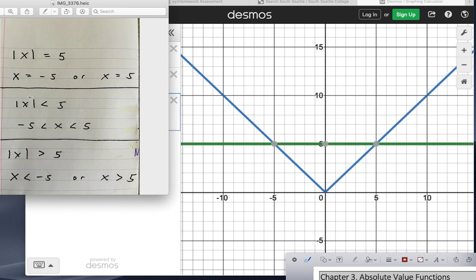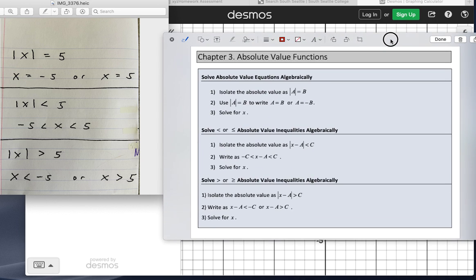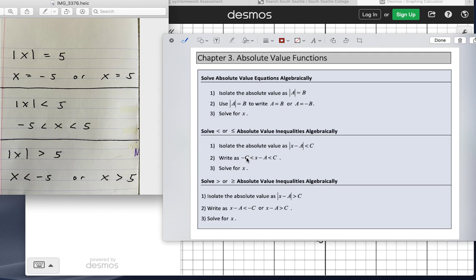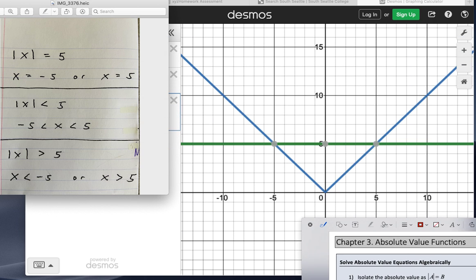So you don't need to do test points. Every time you have an absolute value that's less than something, it's going to be this pointy part at the bottom in between the values. So that's this part right here. So every time we see a less than, we're going to set up this and we're solving for x and we're going to have that continuous interval for a solution set.